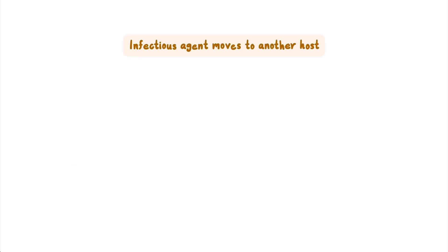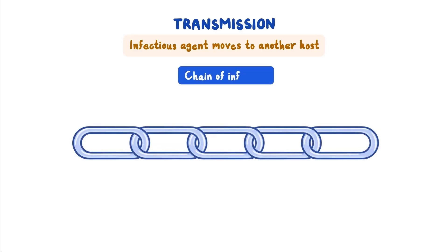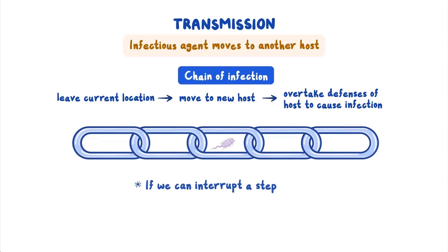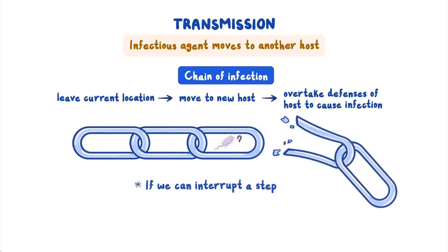When an infectious agent moves to another host, we call this transmission. Transmission requires several steps. It's helpful to think of each step as a link in a chain of infection. The infectious agent must leave its current location, move to a new host, enter the new host, then overtake the defenses of the new host to cause infection. If some action can interrupt a step or break any link in the chain of infection, it is possible to stop or reduce the spread of disease.